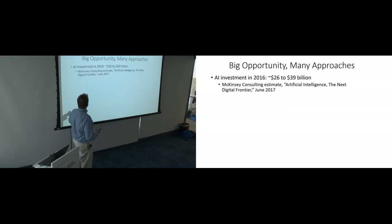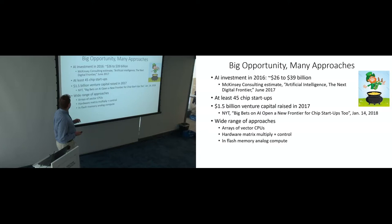So many people are pursuing this. So the AI investment in 2016 was estimated by McKinsey at $26 to $39 billion. So it's a huge amount of money. So there's a big pot of gold out there. And that's led to a lot of people coming up with the same idea of we're going to need more efficient compute hardware. So there are at least 45 computer chip startups targeting various forms of deep learning and machine learning. There was $1.5 billion in venture capital raised in 2017 to fund these startups.